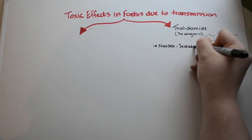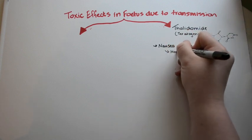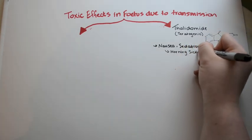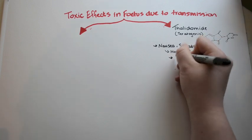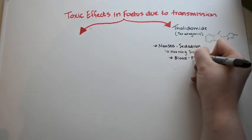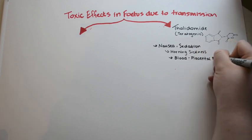Thalidomide was originally used to treat nausea and to cause sedation. It then was discovered to be helpful in treating morning sickness for pregnant women. It was believed that Thalidomide wouldn't cross the placental barrier.